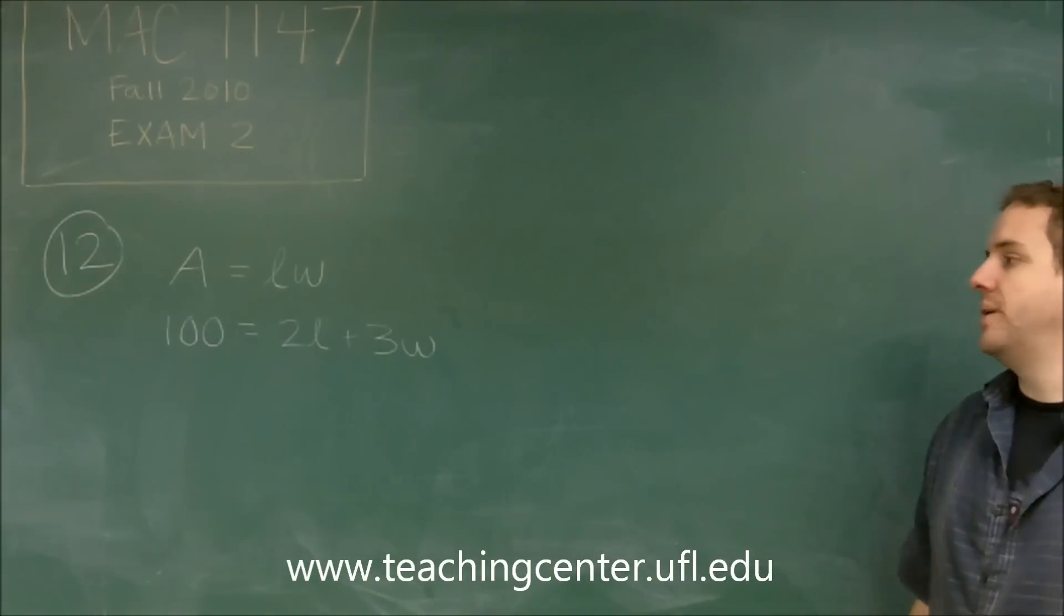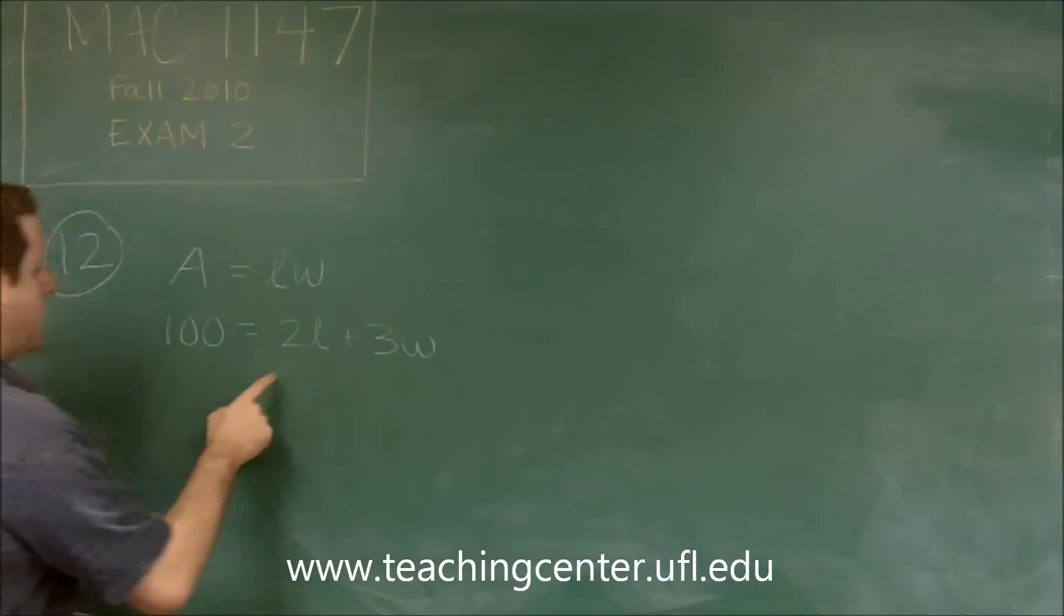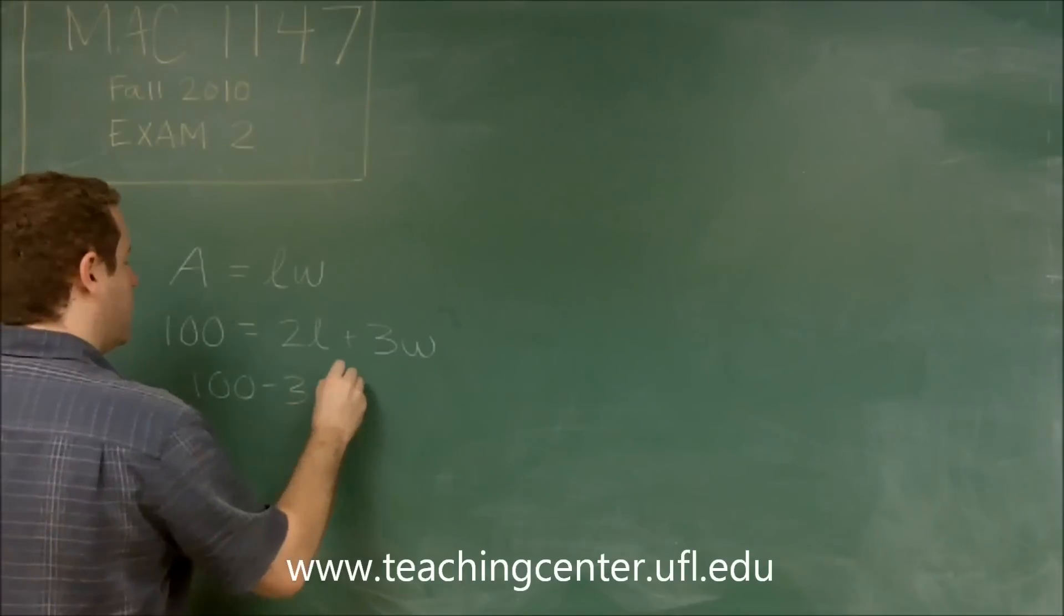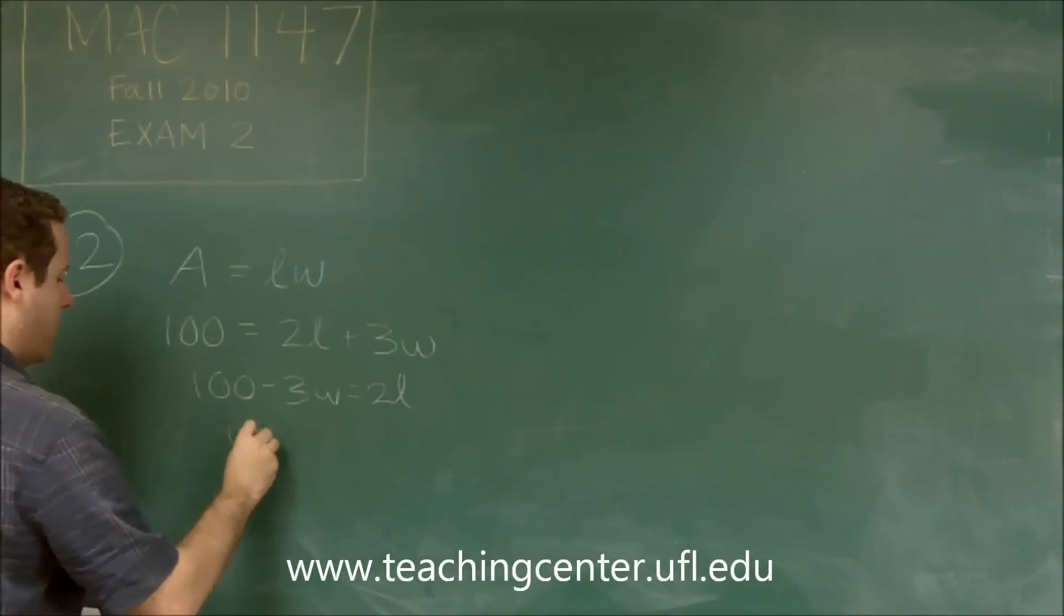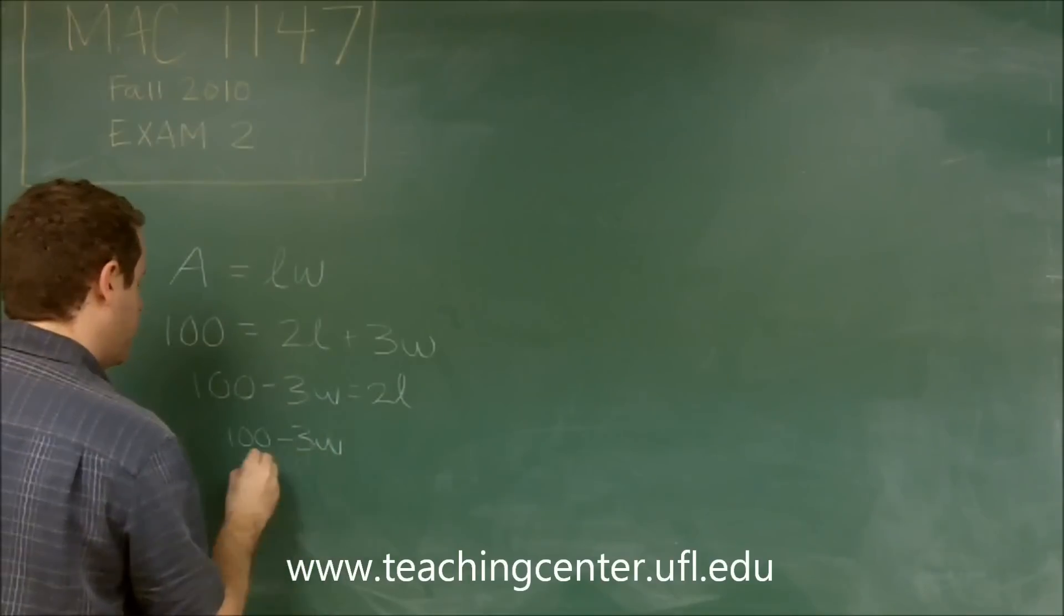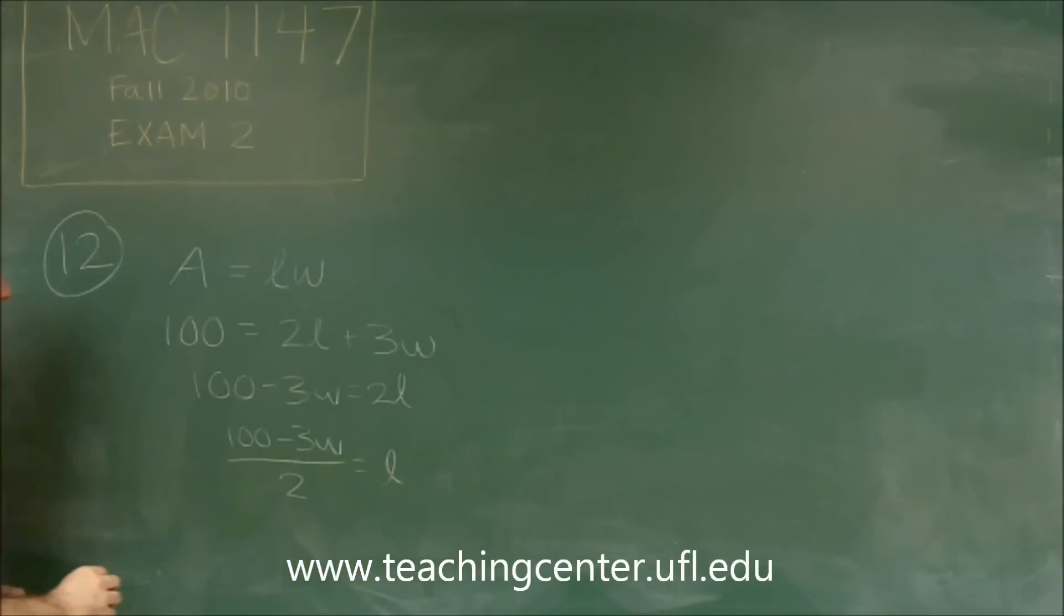However, we can solve for one of the variables and then use it that way. So let's solve for L in this equation. You can say 100 minus 3W equals 2L and then 100 minus 3W over 2 is equal to L.